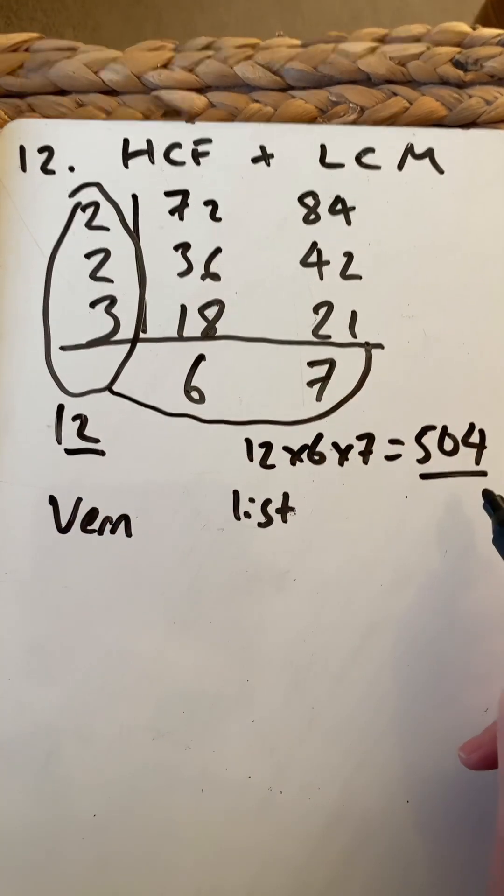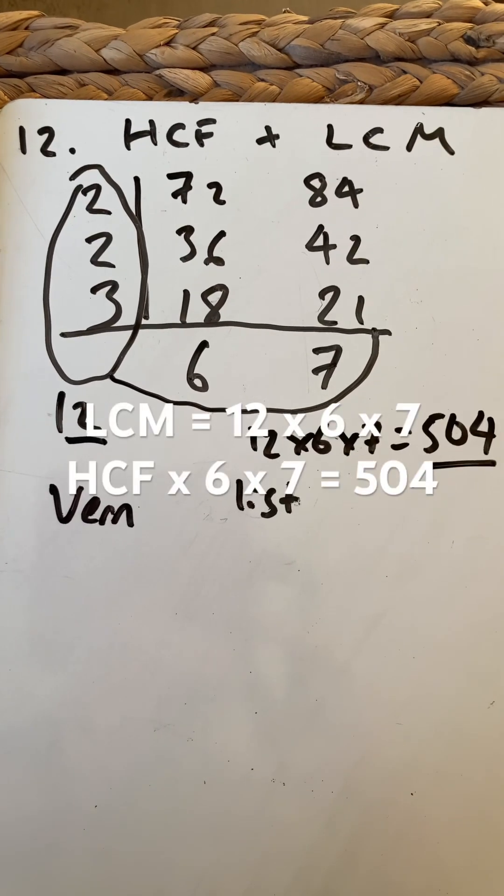So there's the highest common factor and the lowest common multiple using the table method. Thanks.